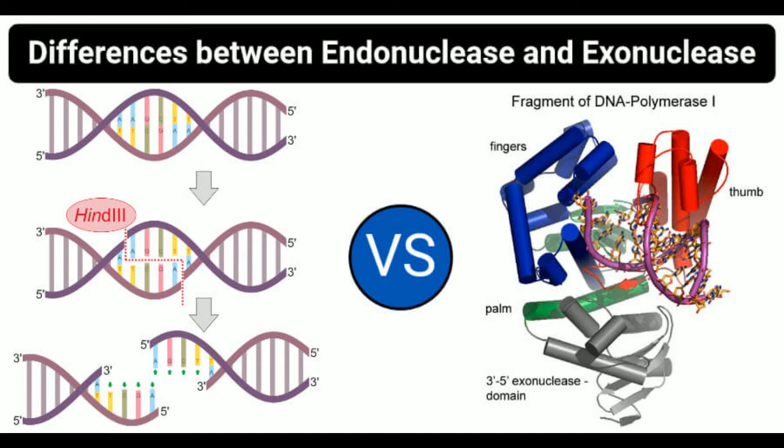Exonucleases, unlike endonucleases, do not have a lag period, as they cleave sequences from the ends, resulting in sticky ends. Exonucleases also cleave individual nucleosides from either of the ends, rather than resulting in oligonucleotides. Exonucleases do not have defensive properties against the entry of pathogenic microbes.